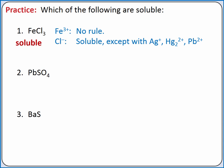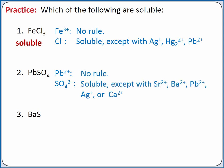Next, let's consider lead 2 sulfate. When we split apart this ionic compound, we have lead 2+ and sulfate ions. Lead 2+ does not have its own rule. Sulfate is normally soluble, but lead 2+ is in the exceptions. So lead 2 sulfate is insoluble.